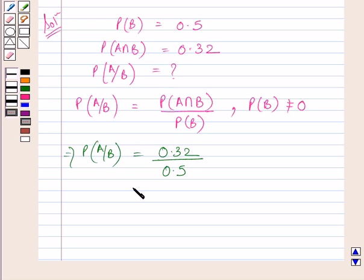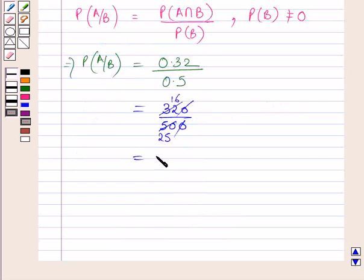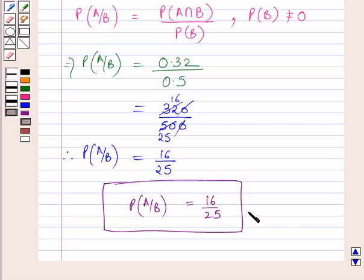Now, simplify further. We get probability of A upon B equals 320 upon 500, which equals 16 upon 25. This is our required answer.